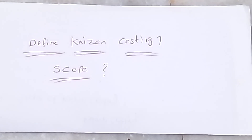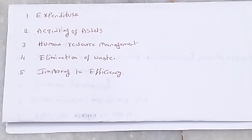Welcome to our channel. Today we are explaining Kaizen Costing: its definition and scope. If you like, share and subscribe to our channel. The following are the scope areas of Kaizen Costing: expenditure, acquiring of assets, human resource management, elimination of waste, and improving the efficiency.